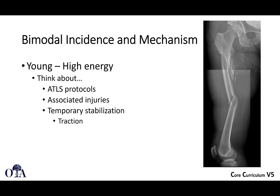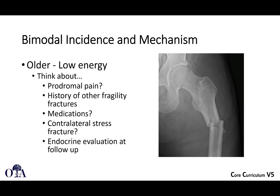In a young patient, oftentimes high-energy trauma, so you have to consider ATLS protocol and associated injuries. A lot of times you're putting these patients in temporary skeletal traction. In the older patients, it's often a low-energy injury. You do have to consider asking about prodromal pain — were they having pain for a while before this happens? That can often be from a pathological fracture, or from that atypical femur fracture from prolonged bisphosphonate use. You also have to look to the contralateral side to see if a stress fracture is developing there.